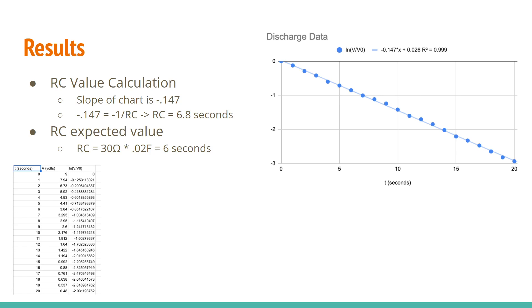Negative 1 divided by that value gets us the RC value of 6.8 seconds, which is our calculation. And then the RC expected value, which you find is just the resistance times the capacitance, you get 6 seconds.